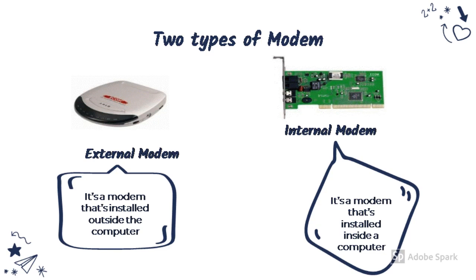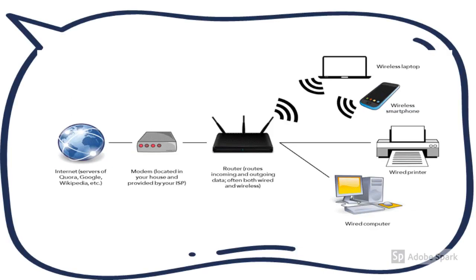An external modem is installed outside the computer whereas an internal modem is installed inside a computer. Many people mistake a router for a modem and vice versa because they look similar — both have indicator lights that blink and ethernet ports on the back, and both transmit data packets from source to destination. However, the main difference is that a modem lets you connect to the internet while a router distributes that connection to different devices. A modem is your gateway to the web while a router is the central hub for your devices.